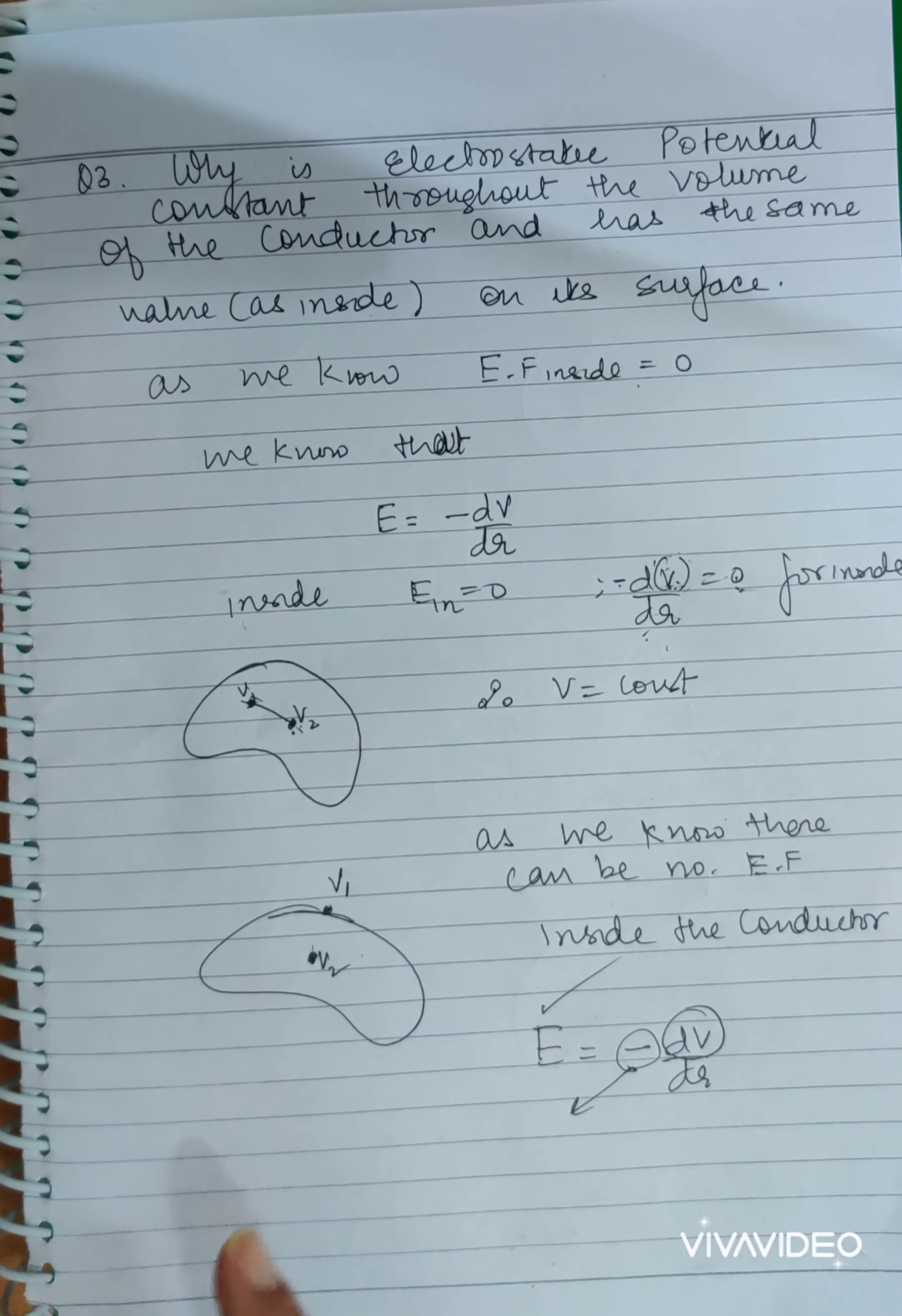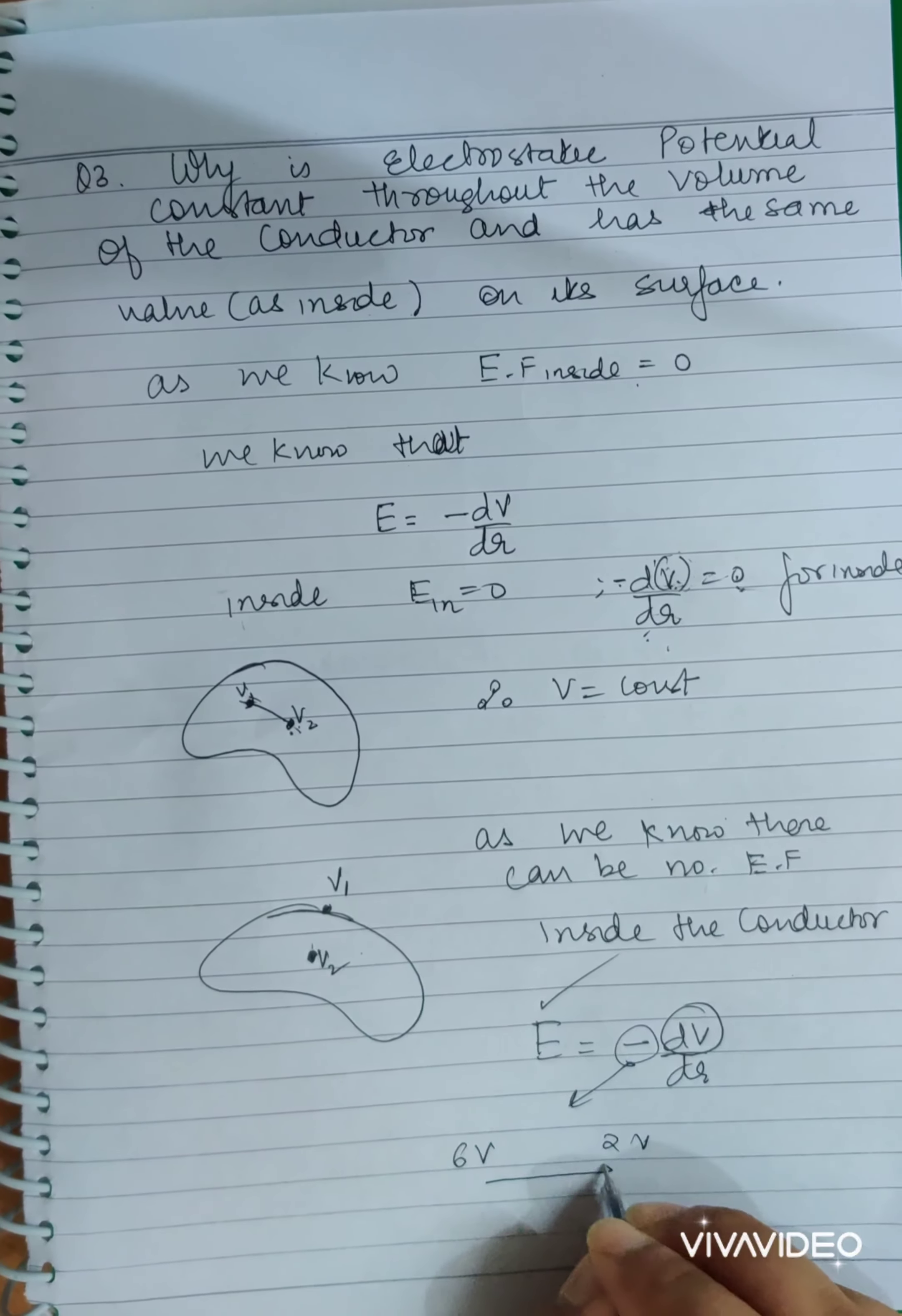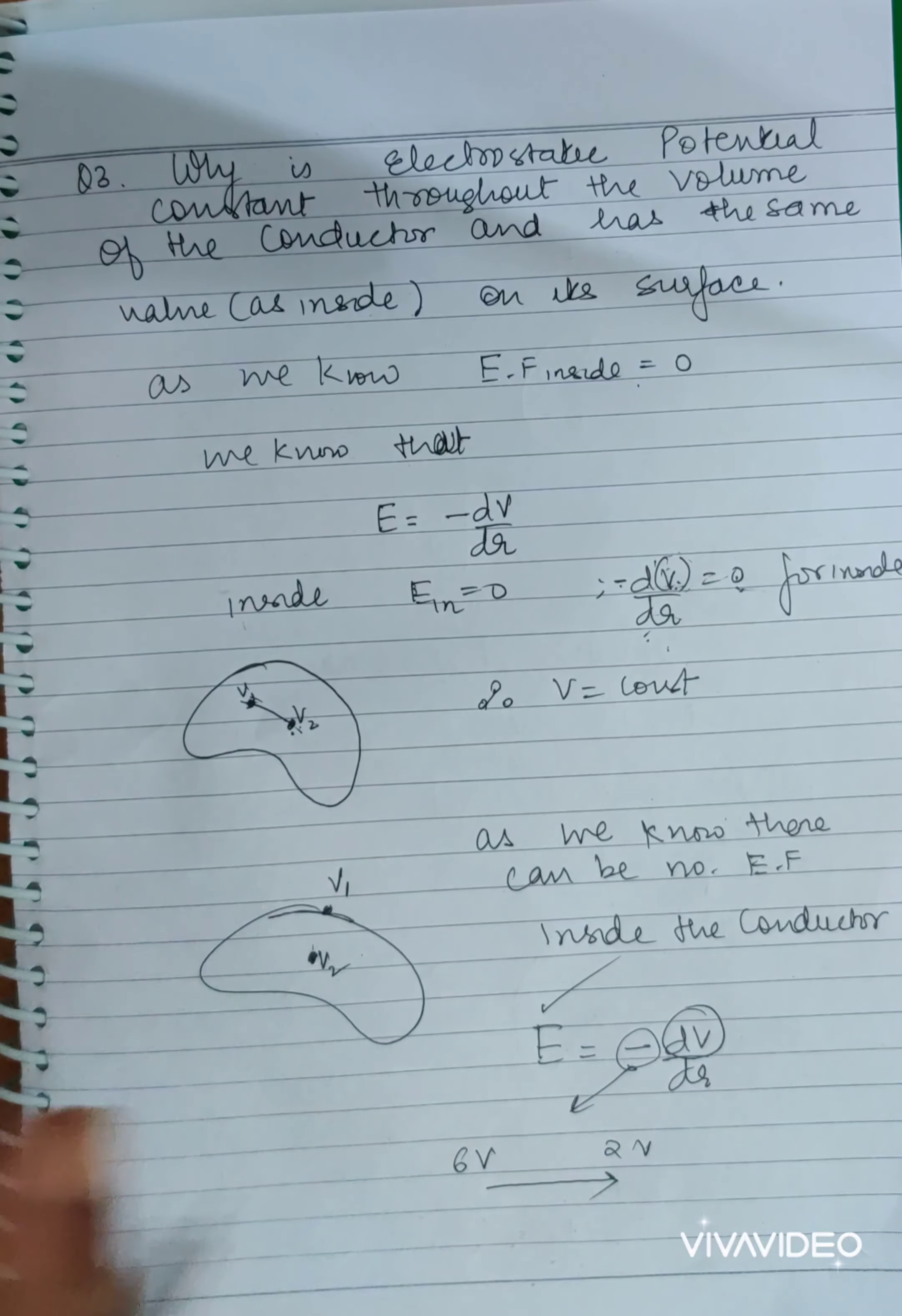The direction in which potential decreases is the direction of electric field. For example, if it is 6 volt or 2 volt, then electric field will be like this, 6 to 2. So if V1 and V2, or if one is greater than the other, then electric field goes from high to low.